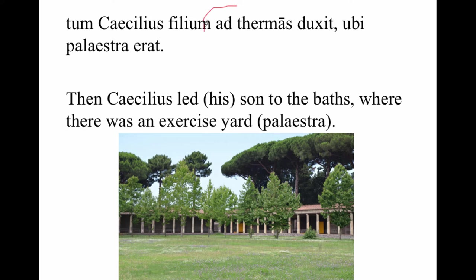There is a way to say 'to' when we mean direction to something. Dative is used when you give something to someone, offer something to someone, show something to someone — but when you lead someone to a place, you'll never use dative for that. You'll still use the preposition 'ad,' which is followed by the accusative. He led his son to the baths where there was an exercise yard.